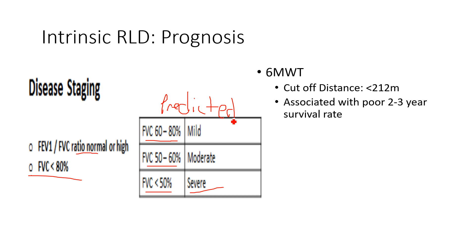The six-minute walk test also provides prognostic cutoffs — patients with low functional capacity typically have a poor prognosis. Unfortunately, there isn't a lot of evidence or many treatment options for this population. Management is largely pulmonary rehab and symptomatic care, and outside of a lung transplant, options are limited. Next, we'll get into mechanical and other disorders — these were the intrinsic disorders involving damage to lung tissue specifically.